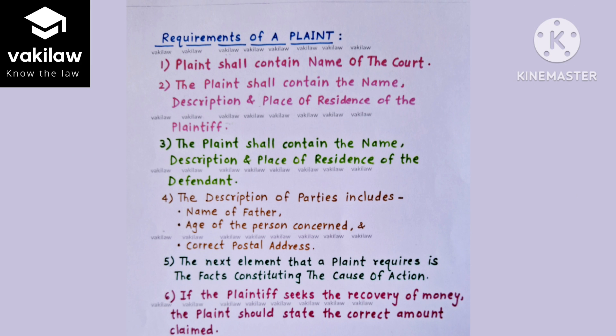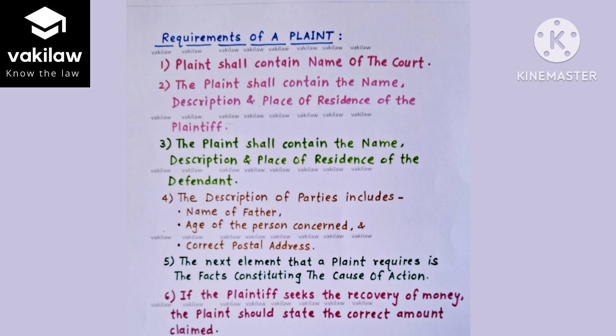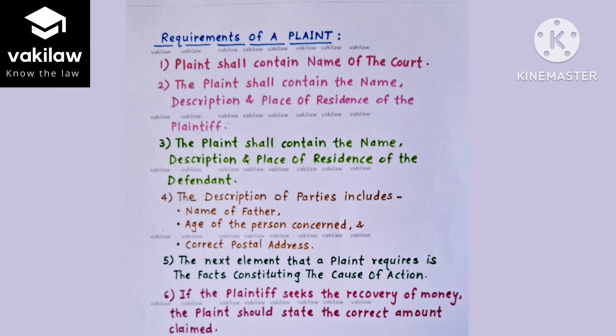Regarding description of parties, it shall include the name of the father, the age of the person concerned, and the correct postal address. So when the requirement says 'name, description and address', the description specifically includes the father's name, the age of the concerned person, and a correct postal address.